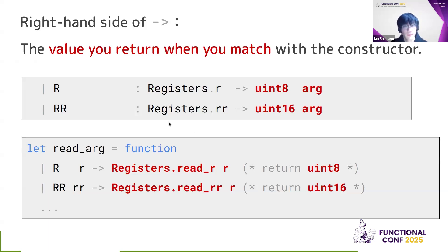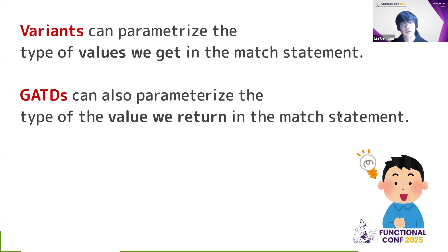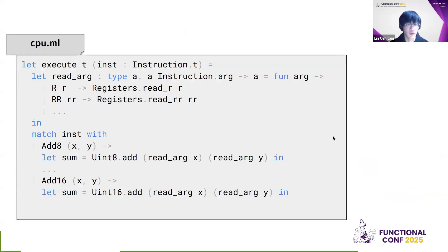So the right-hand side of the arrow, the value you return, it actually means the value you return when you match with the constructor. What does this mean? When you match with the read arg function, when you match with the 8-bit register, the value return will be uint8. This is what this is expressing. And when you match with the rr case, you return a 16-bit value. So this is parametizing the return value of the match cases. So here I have a learning. Variants can parametize with the values we get when you match in the match statement. And GADTs also let you parametize the type of value you return in the match statement. So it's a more generalized version of variants, which is why I think it's called generalized abstract data types. And by using GADTs, I can implement the execute function that I described before. And each of these cases will return a different value. But because the argument type is defined as a GADT, it can be well typed.